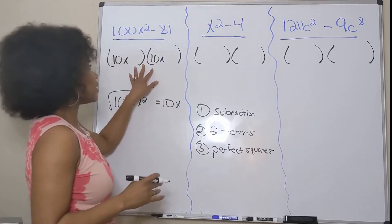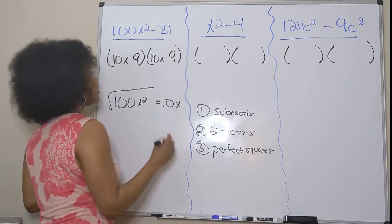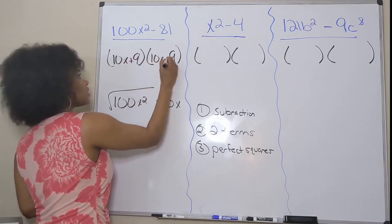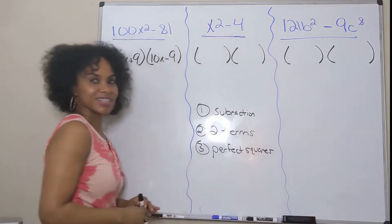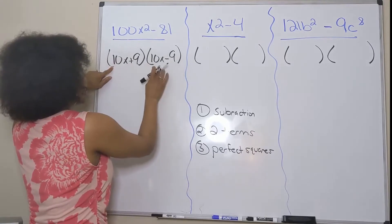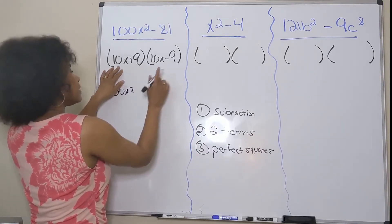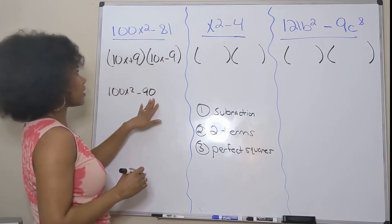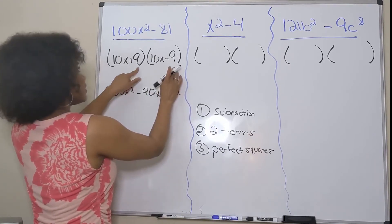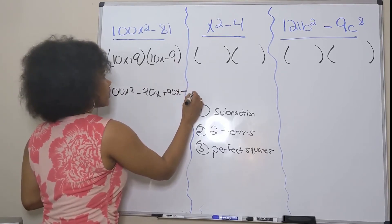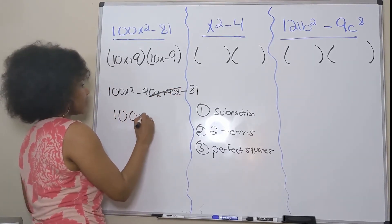The square root of 81 is 9, so I'll put 9 at the end, separated by plus and minus, and I've factored this difference of squares. Let's check it: 10x times 10x is 100x², 10x times negative 9 is negative 90x, 9 times 10x is positive 90x, and 9 times negative 9 is negative 81. The negative 90x and positive 90x cancel out, leaving 100x² minus 81.